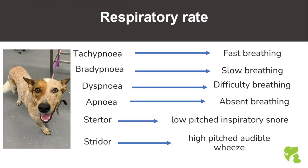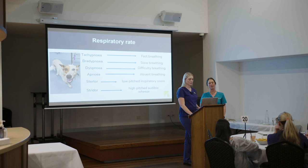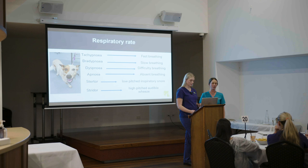Stertor and stridor are both mainly seen in brachycephalic patients. Stertor is a low-pitched inspiratory snore and stridor is a high-pitched wheeze. Stertor is commonly heard from brachycephalic patients and owners often think it's cute snoring, when it is actually not normal. Stridor can indicate restricted airflow — the trachea or somewhere further down may have a restriction — and is mainly seen in brachycephalic patients.